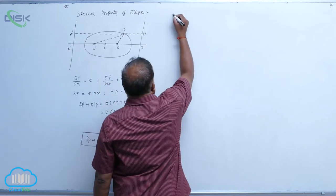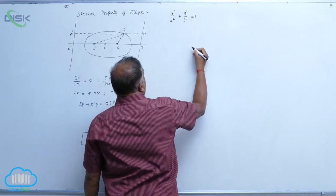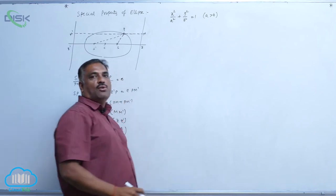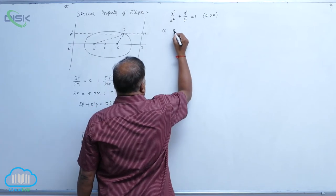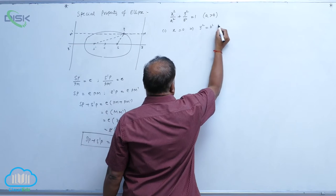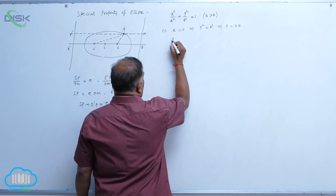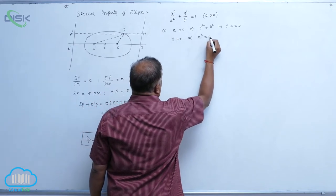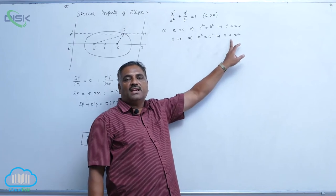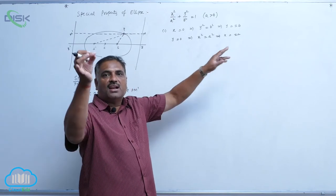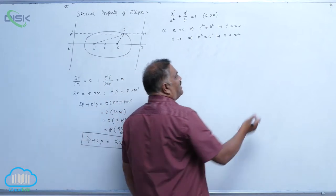Now we will consider the standard ellipse equation x square by A square plus y square by B square equal to 1, where A is greater than B, and discuss the nature of the curve. If you put x equal to 0, automatically y square becomes B square, so y is equal to plus or minus B. If you take y equal to 0, x square equals A square, so x equals plus or minus A. Thus x equal to plus or minus A are two straight lines parallel to the y-axis, and y equal to plus or minus B are two straight lines parallel to the x-axis.